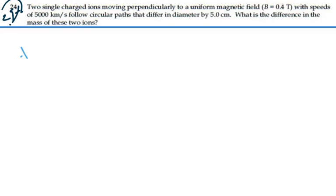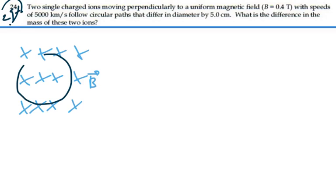So let's imagine we've got an area which has a magnetic field into the page and we throw one ion in there and it moves through a certain diameter. This could be mass 1. And we throw another ion in there and it moves through a certain diameter. That could be mass 2. And we're saying that the difference between these diameters is 5 centimeters.